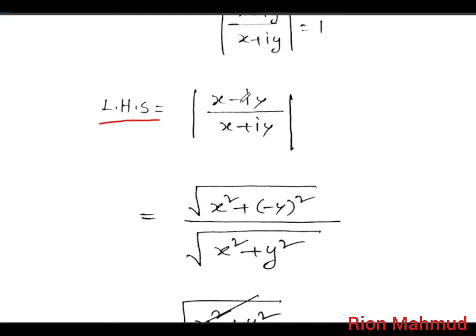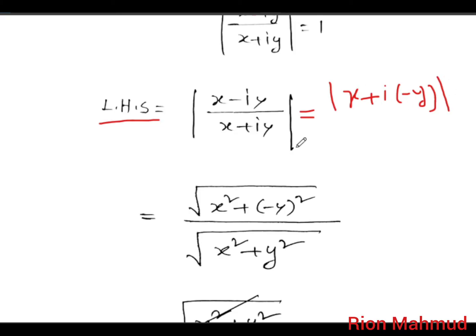We take the original x minus iy by x plus iy. We can move to simplify — x squared plus y squared. Taking the modulus, x plus i and minus one, to work through the channel.